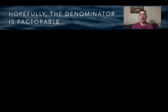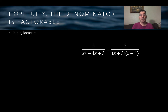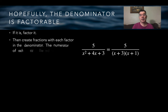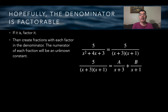What we want to do is see if the denominator in the expression is factorable. In the example I'm giving, the denominator is factorable: x squared plus 4x plus 3 can be factored into x plus 3 times x plus 1. From there, we can separate the original fraction into two fractions, each with one of the factors in the denominator.